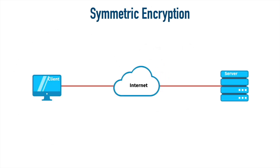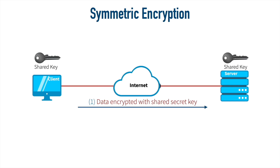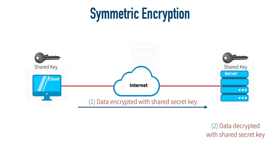In the symmetric encryption example, the client wants to send traffic confidentially to the server. It has a shared key that is also shared with the server — they have the same key. The client scrambles the data using that shared secret key, and the server uses its matching key to decrypt that data. This happens very rapidly. Asymmetric encryption is much slower, but it can be more flexible because we still have the challenge of how to get the shared secret key onto two different devices.